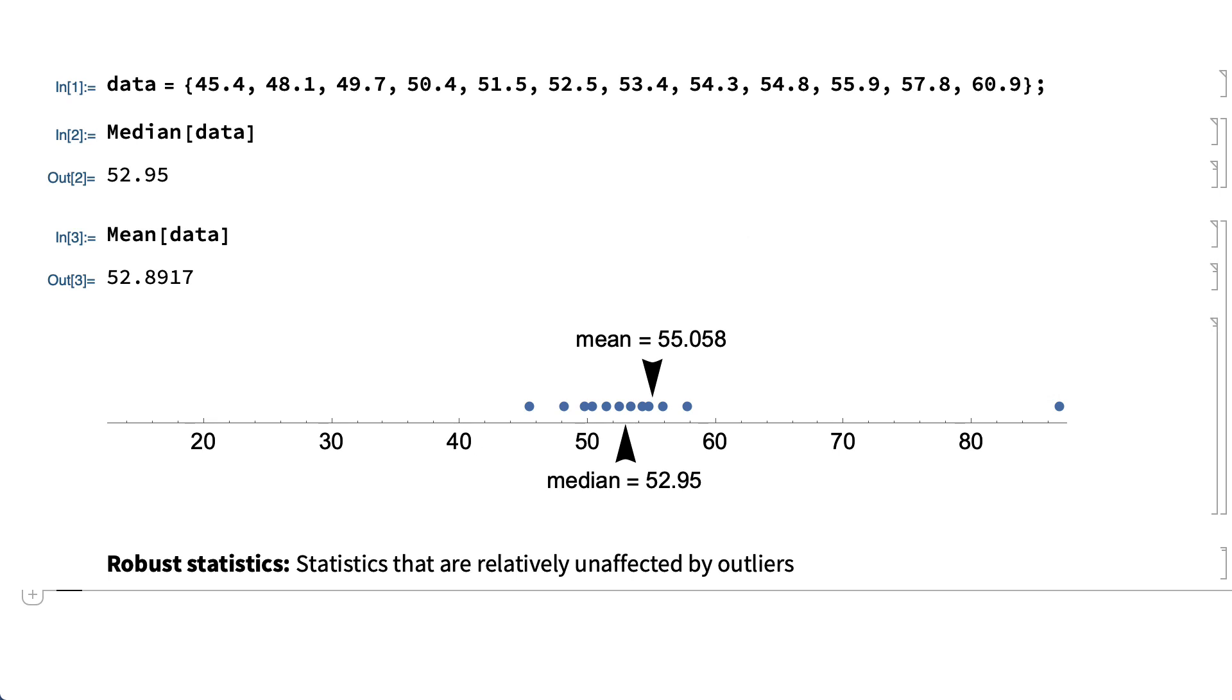Another robust way of dealing with outliers is a statistic called a trimmed mean, which is the mean calculated after throwing out points near the edges of the distribution.